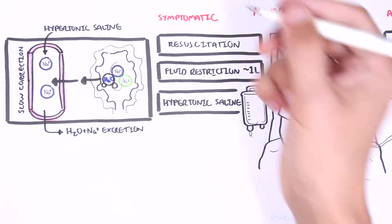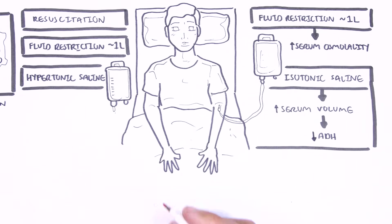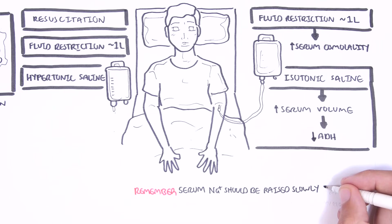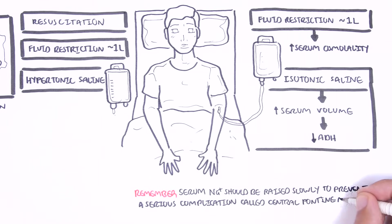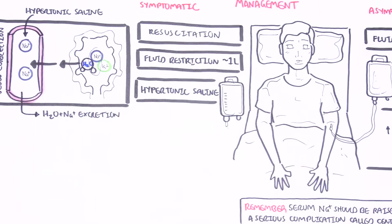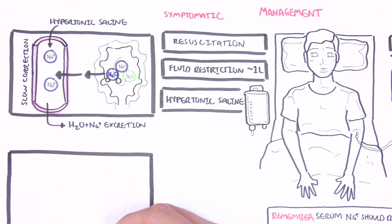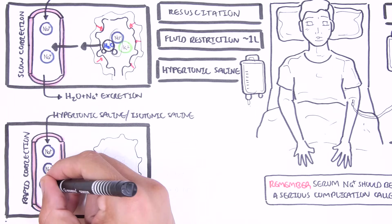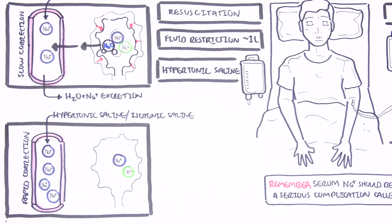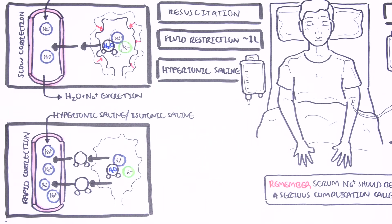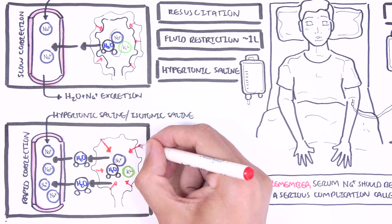The management approach is slow correction of sodium levels — plasma sodium concentration should be slowly increased, for example a maximum of 12 millimoles per liter during the first 24 hours. This is to prevent a serious complication of rapid sodium correction called central pontine myelinolysis. This condition is due to rapid shift of water from the intracellular space into the extracellular compartment, leading to shrinkage of brain cells. If you give someone too much hypertonic saline too quickly, the large sodium load draws all the water from the intracellular compartment of brain cells, causing them to shrivel and shrink.